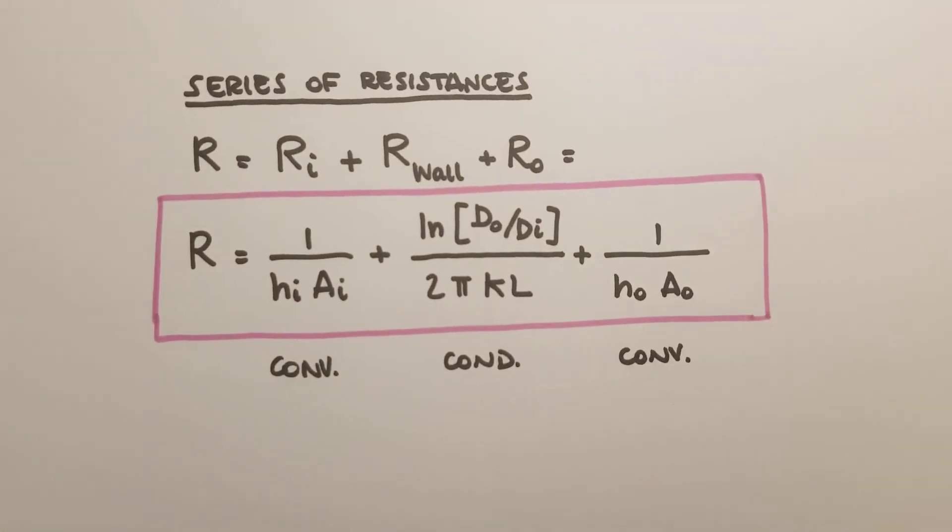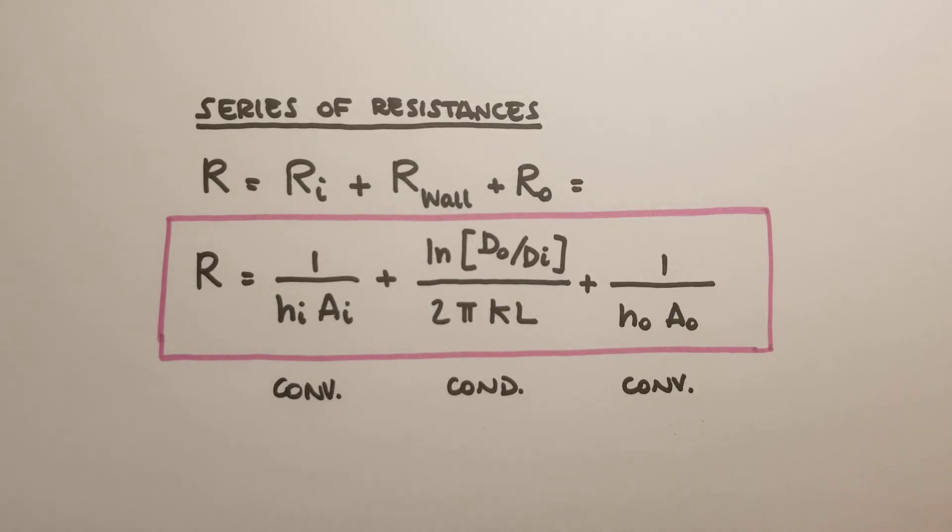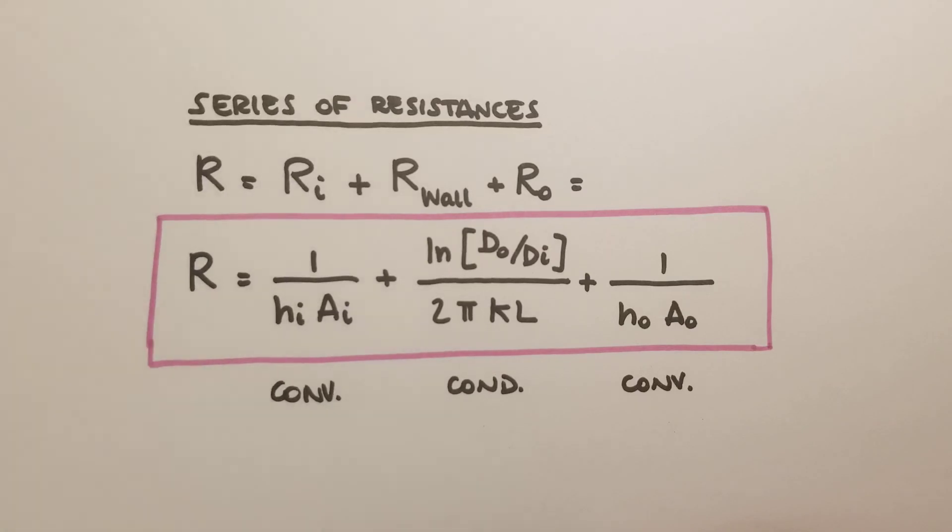If we use the network analogy, these three resistances are in series, so the total resistance is the sum of the three resistances. We have a resistance Ri due to convection of the fluid inside the circular pipe, then a conduction resistance R_wall, and then another convection resistance for the fluid in the outer part of the heat exchanger. We can sum the three. Remember, this is in cylindrical coordinates, so the R_wall has a log term. Here, Ai and A0 are the surface areas, respectively, of the internal fluid and the external fluid.